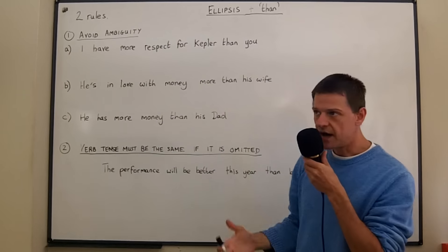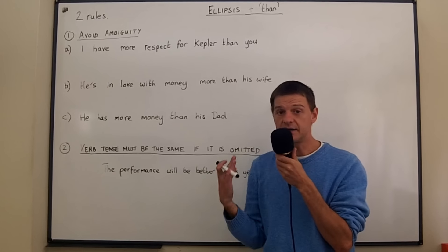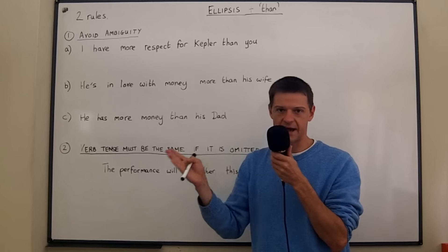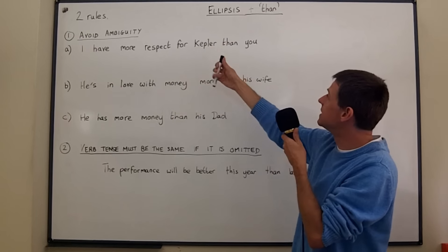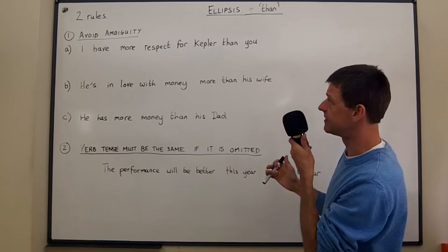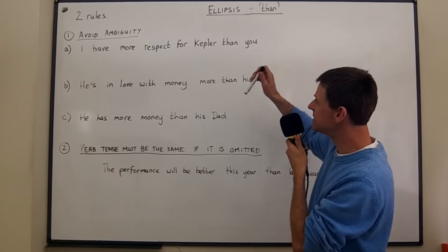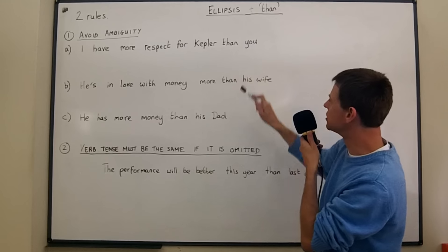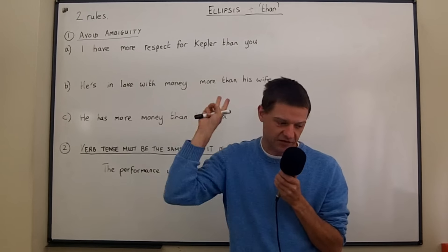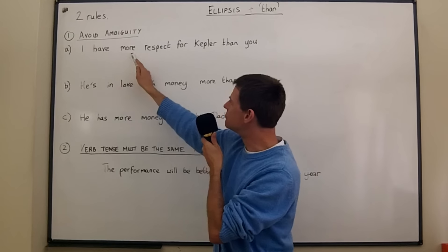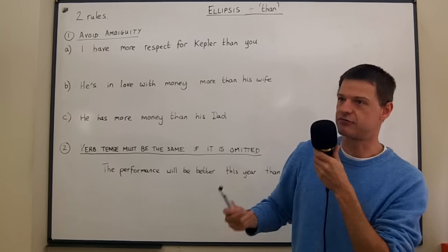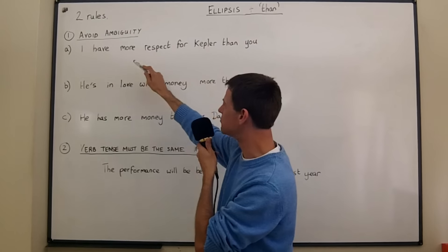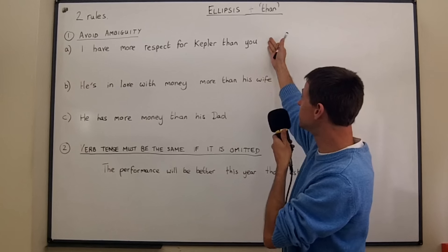Rule one: avoid ambiguity. Some comparatives will be ambiguous — unclear exactly what you mean. Very often there'll be two possible meanings. To avoid having two completely different meanings in the same sentence, we need to use ellipsis correctly and parallelism. Look at sentence A: 'I have more respect for Kepler than you' — the German astronomer. What do I mean here? There are two different things I could mean.